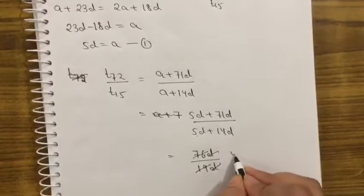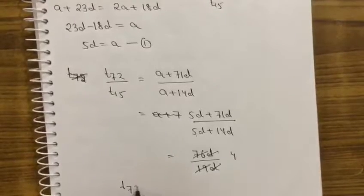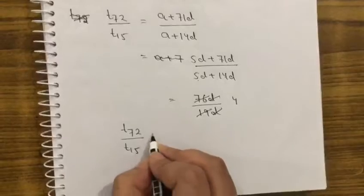T72 upon T15, how much is it? 4. This means T72 upon T15 equals 4.